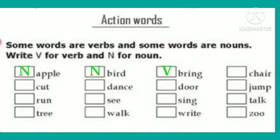The fourth word is chair. Chair is name of thing, it is noun. Next is cut. The word cut is verb. The next is dance. Dance also denotes verb. Door — it is noun. The word jump is verb.